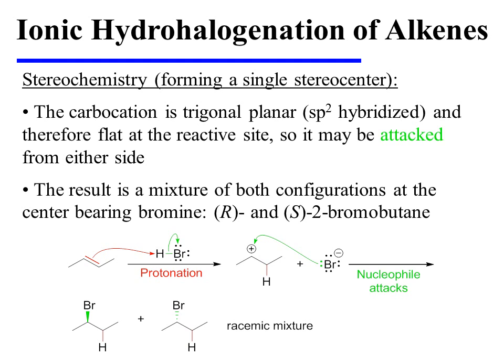Bromide may attack from above to yield one stereoisomer, or from below to yield the other stereoisomer. The result is a mixture of both configurations at that new stereocenter, which in this case affords a racemic mixture of enantiomers.